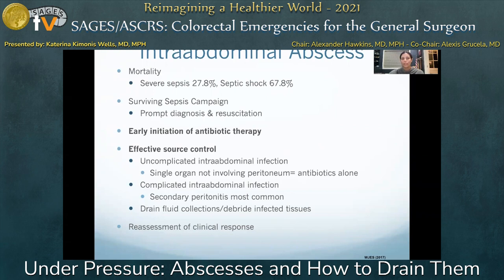Source control in the case of intraabdominal abscess is guided first by classifying the infection as uncomplicated — involving one organ but not the peritoneum — or complicated with peritonitis. In the case of uncomplicated infection, antibiotics alone may be an effective strategy. In complicated infection resulting from loss of integrity of the GI tract or other infected viscera, drainage and/or debridement may be required to achieve source control.